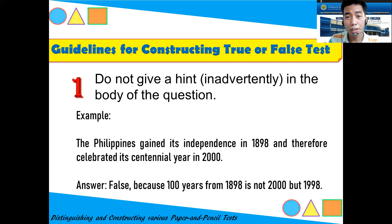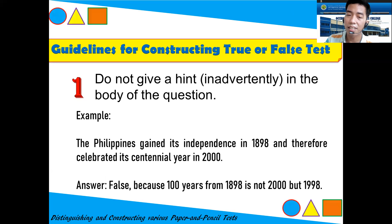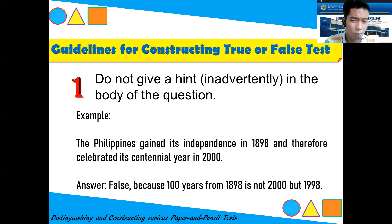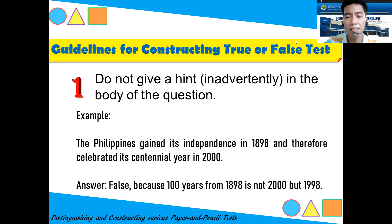Guideline one: Do not give hints inadvertently in the body of the question. For example: 'The Philippines gained its independence in 1898 and therefore celebrated its centennial in 2000.' The answer is false because 100 years from 1898 is 1998, not 2000. So do not give away the answer through the wording of the question.